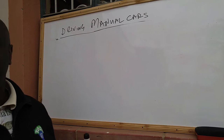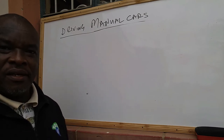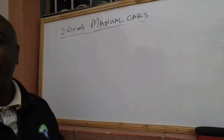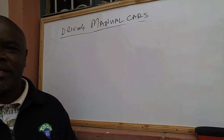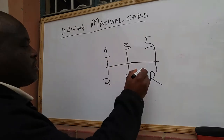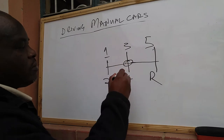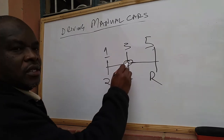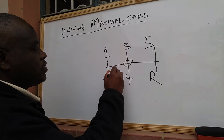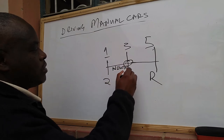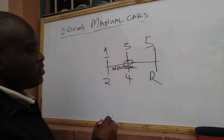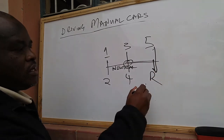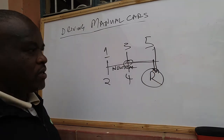A car also has the reverse gear. The reverse gear is for reversing the car so that you can turn it or park it. When engaging reverse, the car will typically be at the neutral position — and from neutral, you engage reverse gear and the car will move backwards.